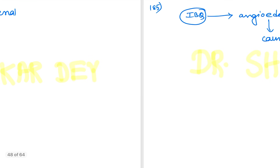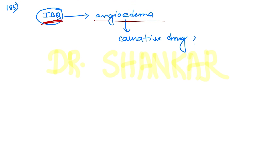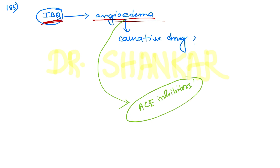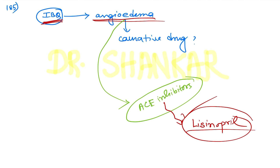Question number 185: an image-based clinical scenario showed a patient on an antihypertensive who developed angioedema features — facial puffiness, swelling of the eyelids, and perioral region. This is angioedema. The group of antihypertensive drugs most commonly responsible for angioedema is ACE inhibitors. Among the options, lisinopril was listed, making it the correct answer.